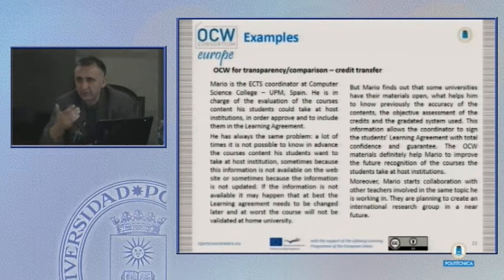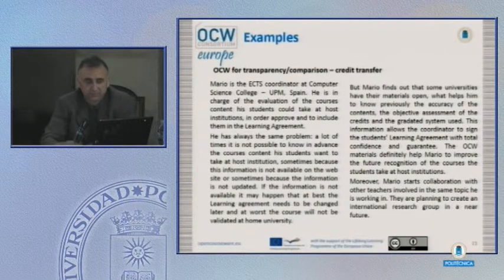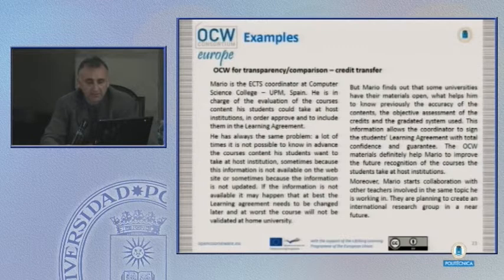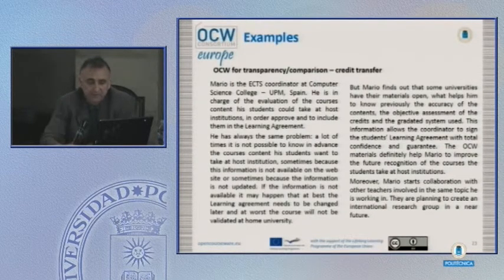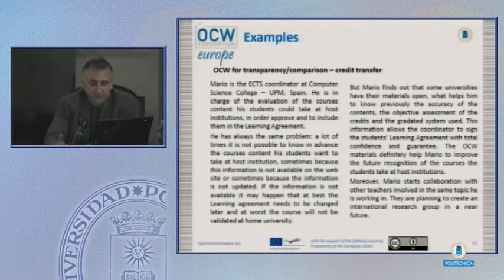To explain some scenarios in more detail, here is a typical problem explained to me by someone in charge of the international office at my university. Mario — a fictitious name — is the ECTS coordinator at the Computer Science College at UPM, Spain. He is in charge of evaluating courses that his students could take at a host institution to include in the learning agreement. The problem is that it is often not possible to know course content in advance — sometimes the information is not available on the website, sometimes it is not updated. If information is not available, at best the learning agreement needs to be changed later; at worst, the course will not be validated at the home university.